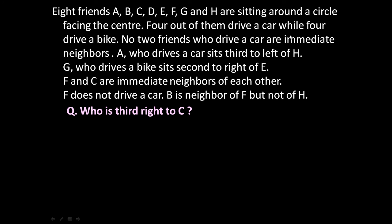4 out of them drive a car while 4 drive a bike. No two friends who drive a car are immediate neighbors. A, who drives a car, sits third to left of H.